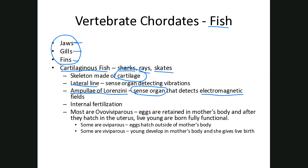One new feature we're seeing is internal fertilization. Most cartilaginous fish are ovoviviparous, which means they have eggs but they're retained inside the mother's body, where they hatch in the uterus, and then live young are born fully functional — able to swim and function on their own. Some are oviparous, meaning the eggs hatch outside of the mother's body, and some are viviparous, meaning they're actually developing inside the mother's body and she gives live birth.